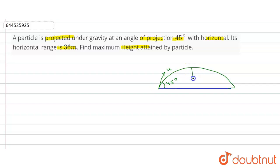So we have to find this H max, maximum height. And here the range is given how much? This range R value is given as 36 meters. So we know the formula of range R is equal to u² sin 2θ upon g.